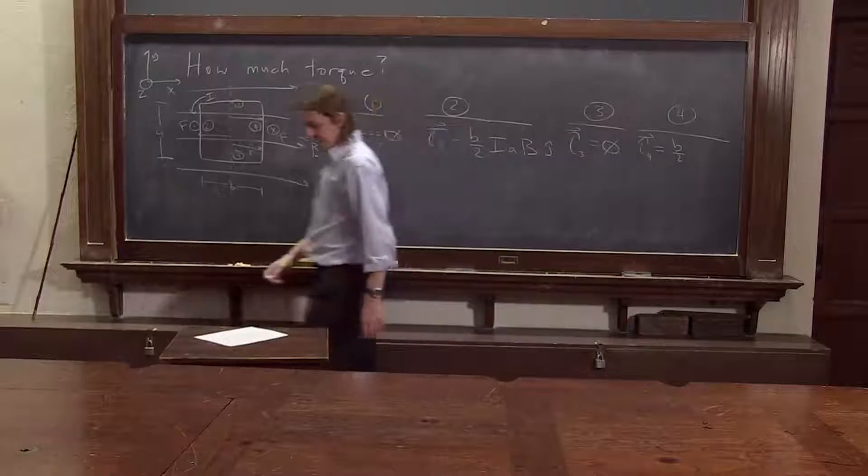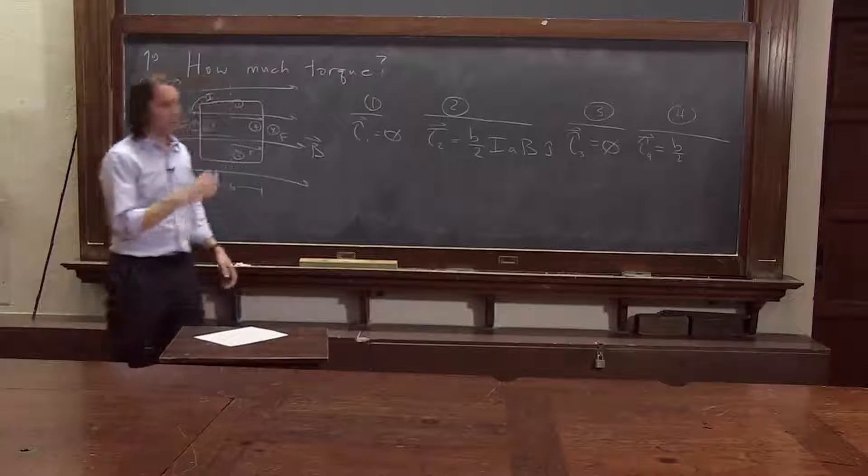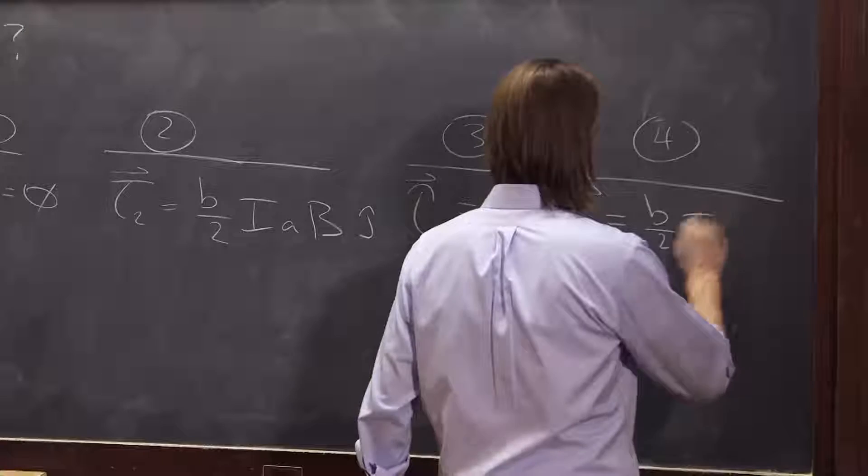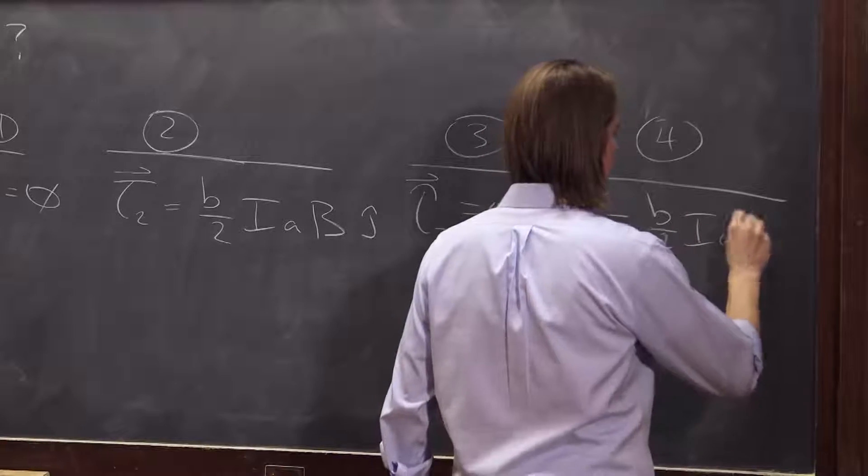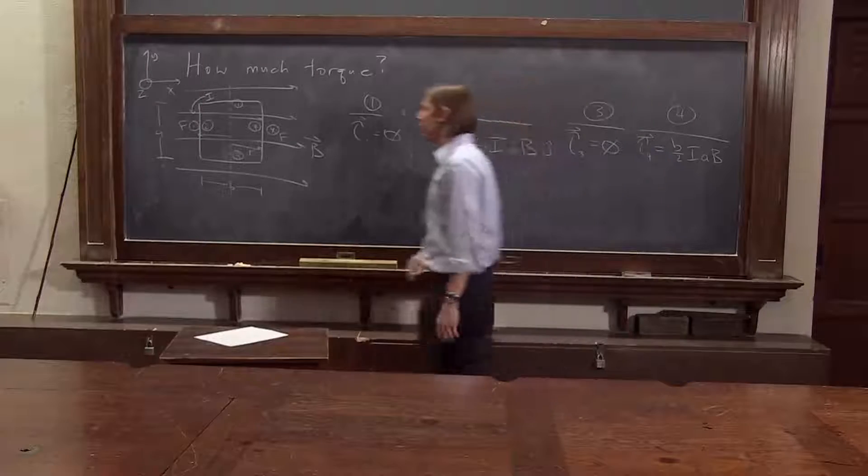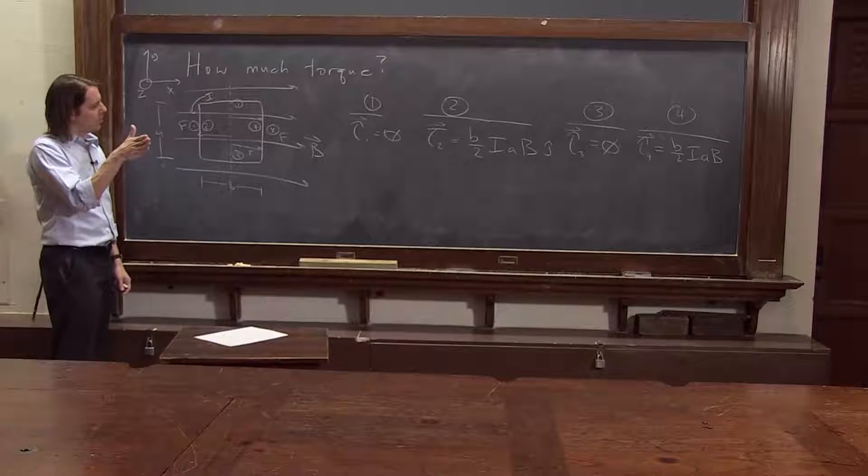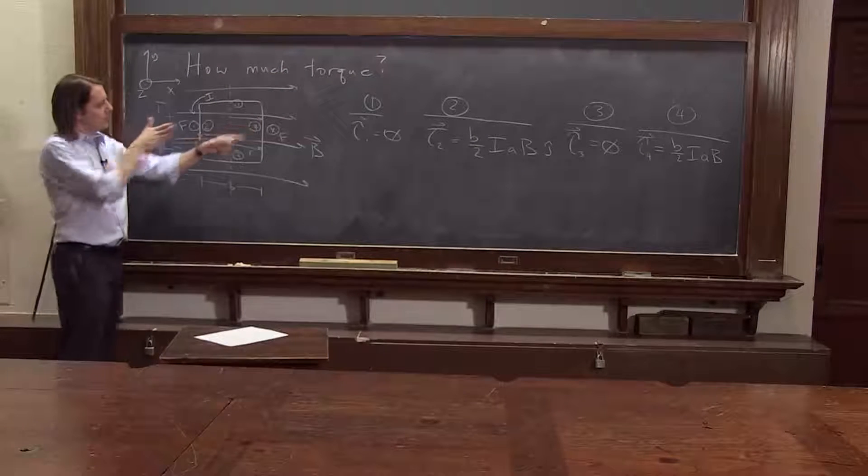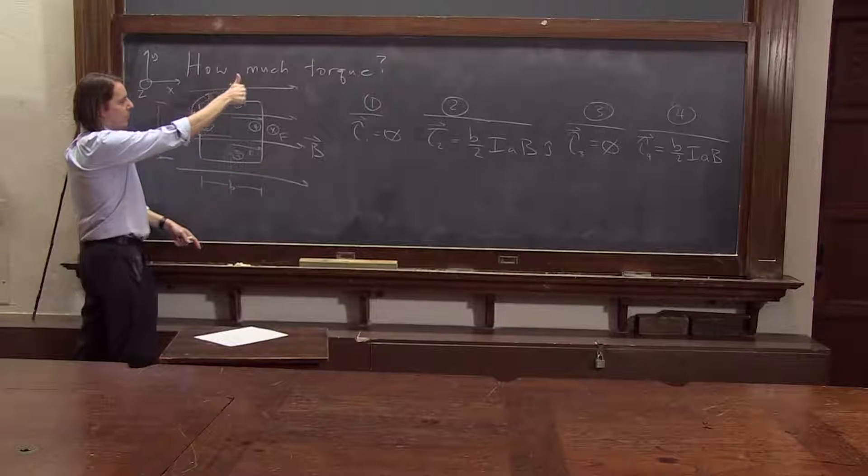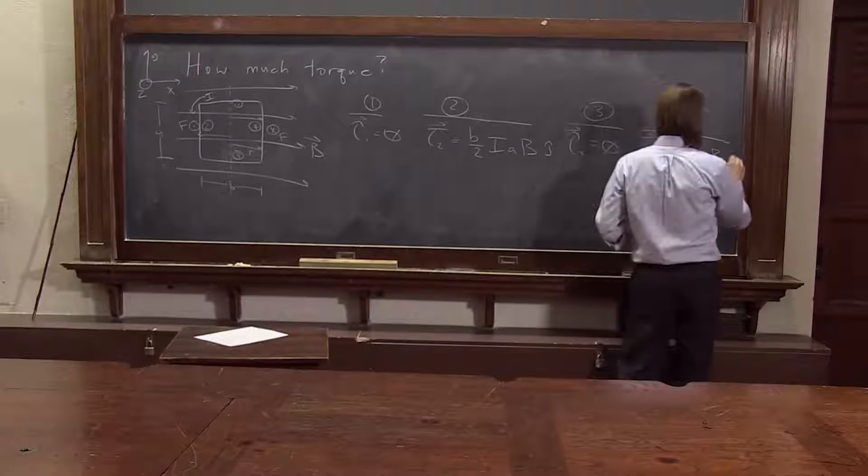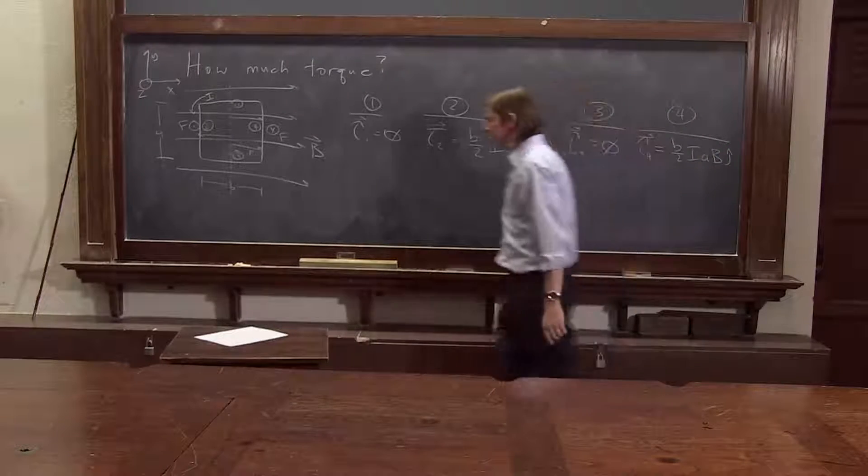Okay. And the force was, again, IAB. And which way? R cross F into the board, up. Same direction, up. Also known as J hat in this case. In the positive Y direction.